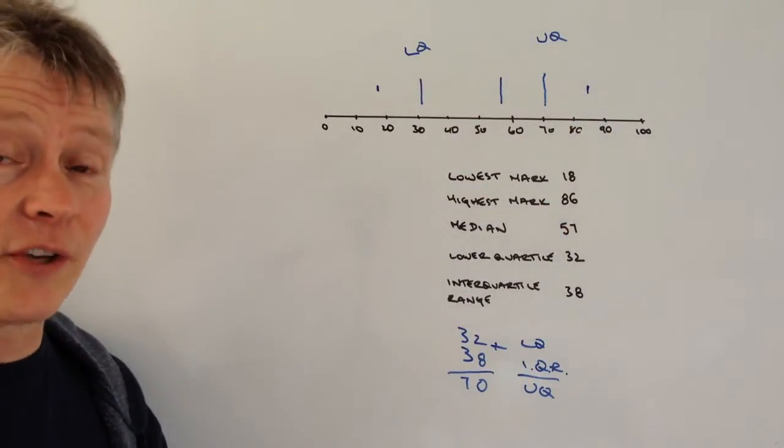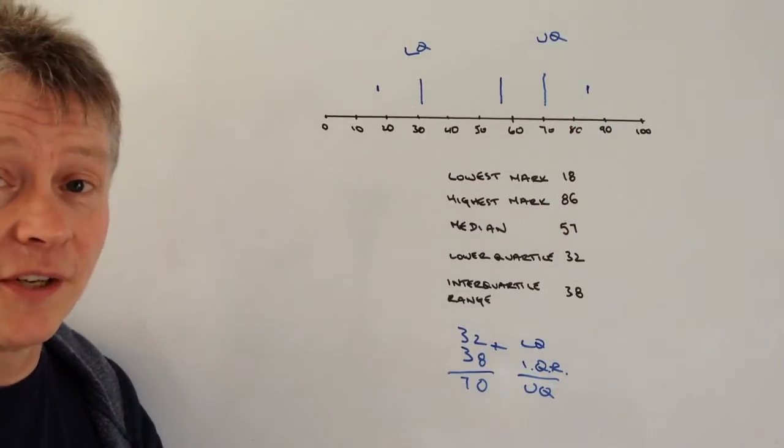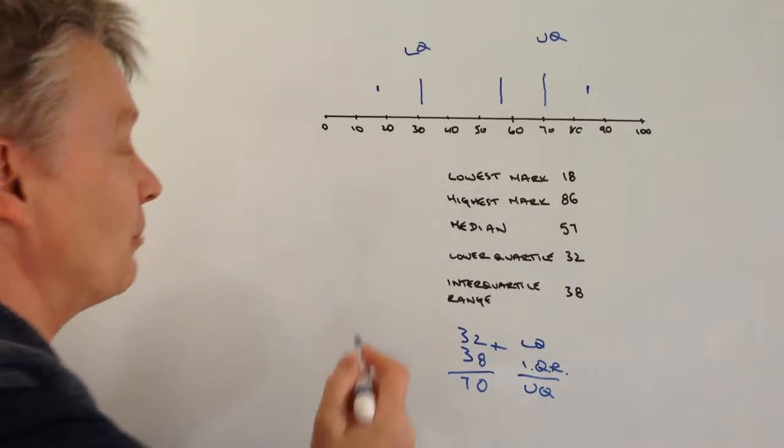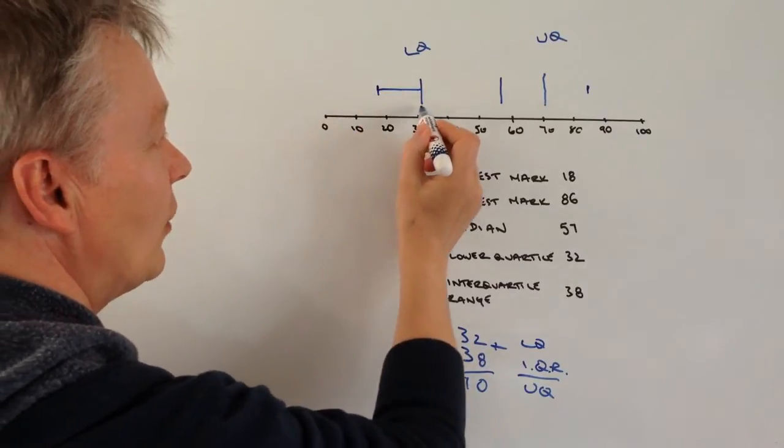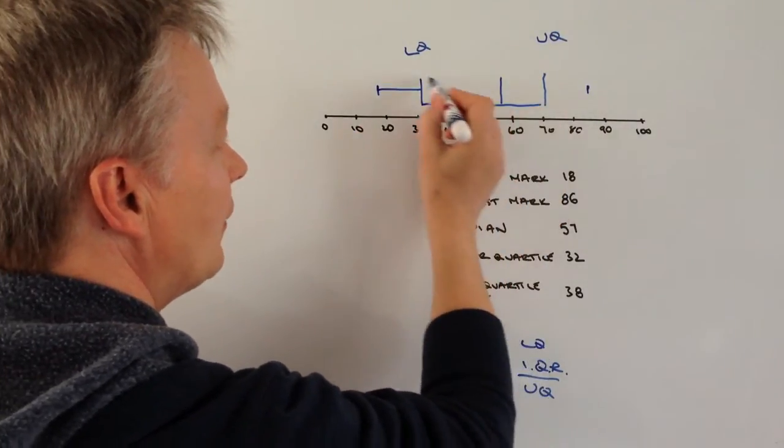So we've got pretty much our box plot. What we need to do now is just draw the lines in, make it look a little bit like cat's whiskers, as I was describing it before. So we're going to draw like that.